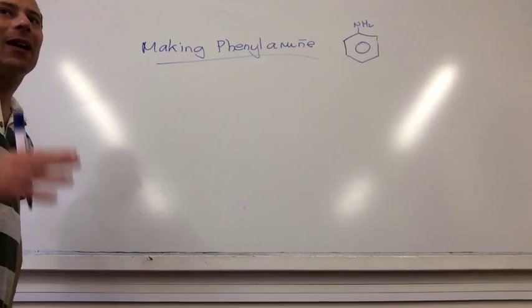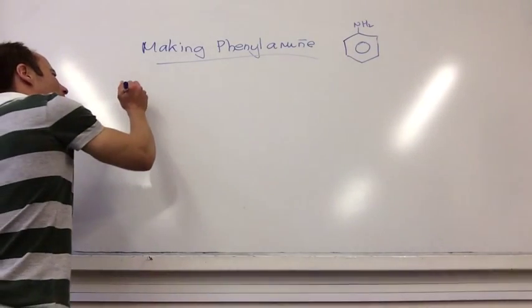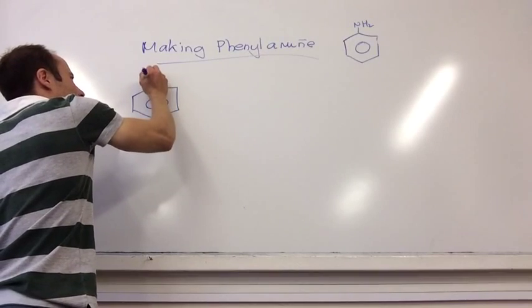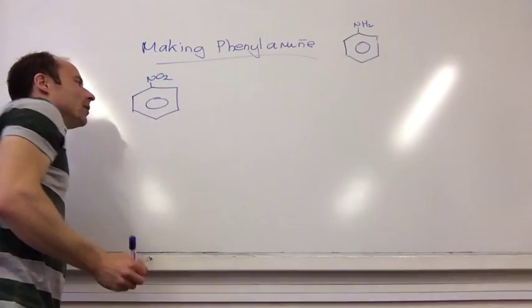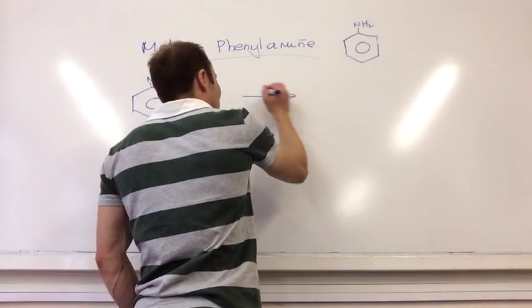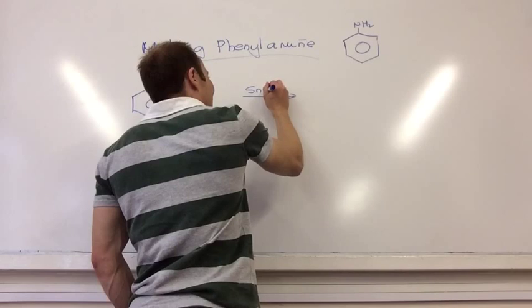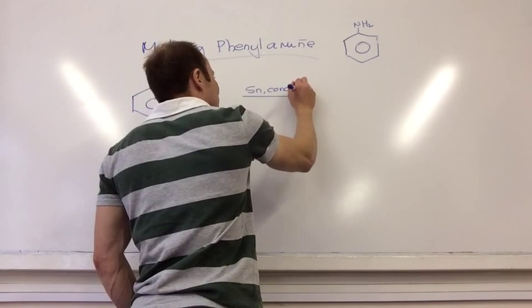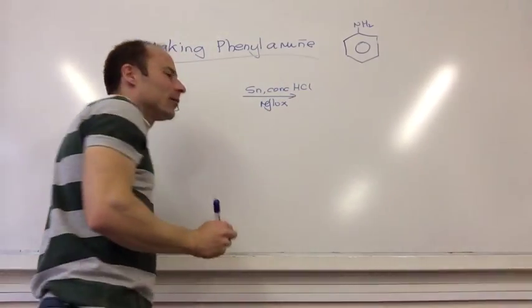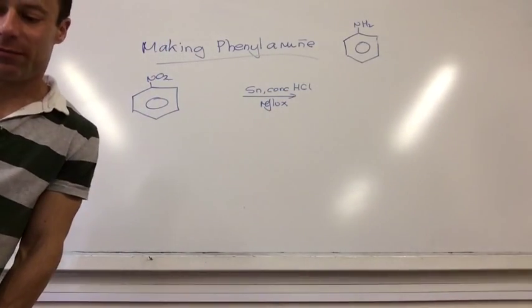Right, so how would I make that? Well, you start from nitrobenzene. Oh no! And you react it. I'm going to put this over the arrow with tin and concentrated HCl. And you need to reflux. That's a reduction reaction.